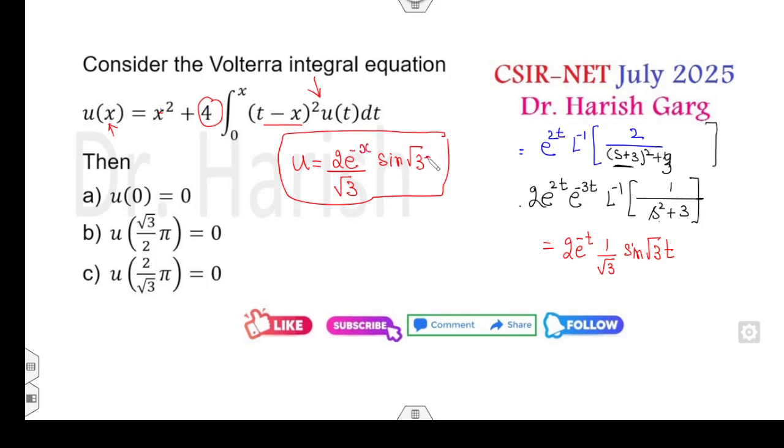Now you can substitute the value. u of 0 is 0 because sine 0 is 0. You can also get the u of 0 from here: this is 0 plus 4 times integration from 0 to 0, which is always 0. Root 3 by 2, so 2 over root 3.